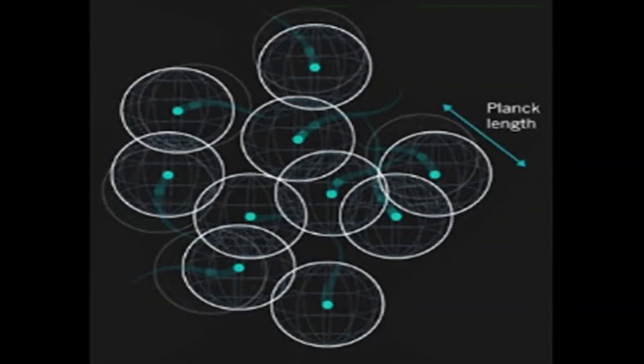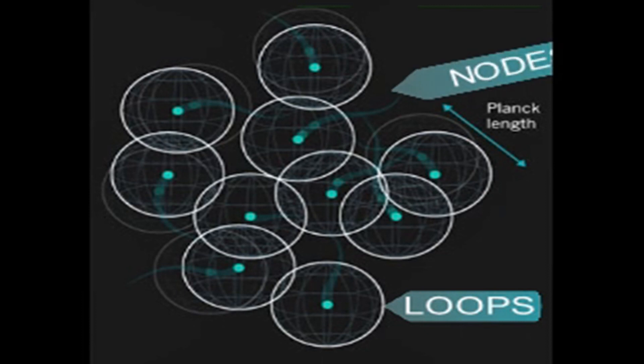The same thing happens in actual space. These threads would instead be numerous loops. As you can see, these loops are connected to each other at points known as nodes. Multiple connections lead to a network known as the spin network. So in reality, space itself is weaved by this quanta of gravity.